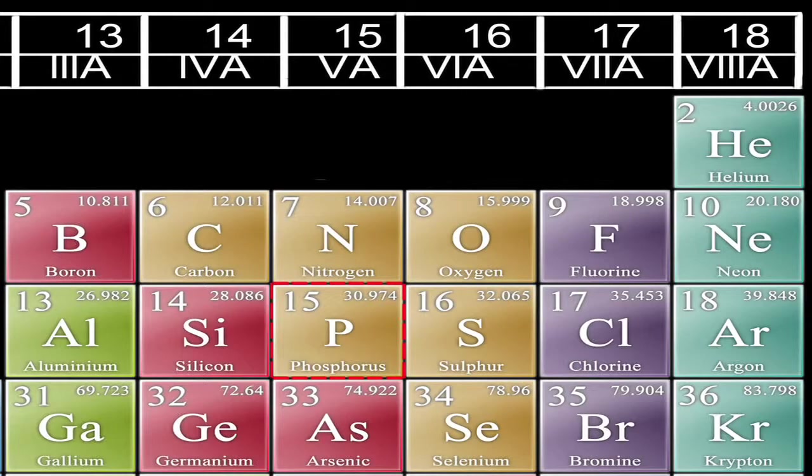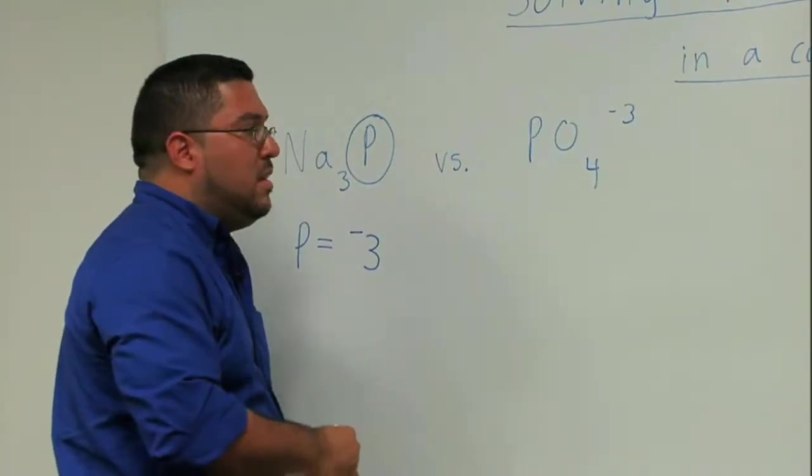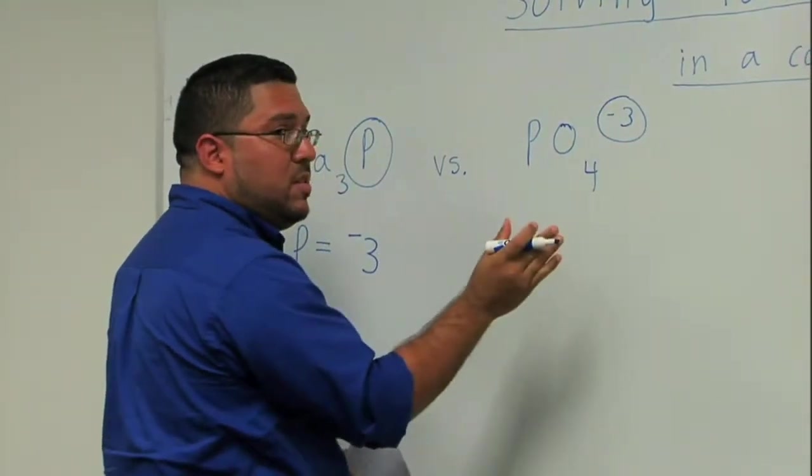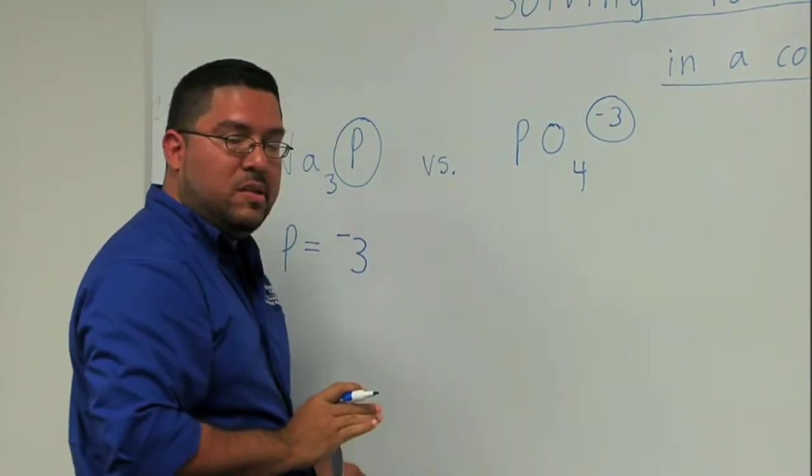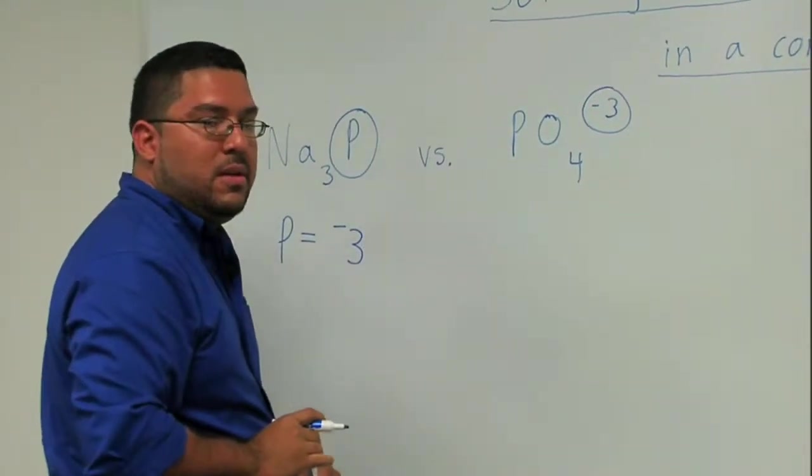Now, the key thing to look at when you're dealing with a compound like this is this is what is known as a polyatomic. Whenever you have a charge at the top, this makes this very different, not to mention also that we have a non-metal and a second non-metal. So this makes this a covalent compound, but in particular what is known as a polyatomic compound.